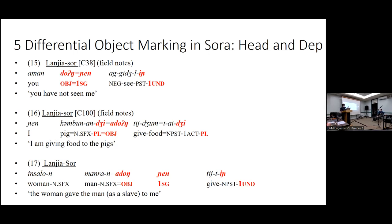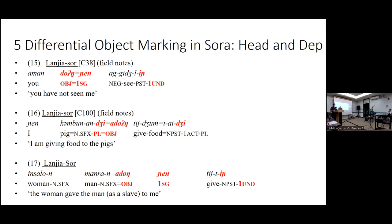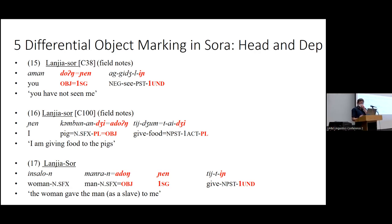One interesting thing about the dependent marking system in Sora is that we see a split in the distribution of the case marker. If it's a first or second person pronoun, the case marker appears as a prefix or proclitic. But if it's a third person pronoun or noun, it occurs as a suffix. This is a consistent pattern — pronouns take the case as a prefix, anything else takes it as a suffix. We're currently working on determining the prosodic integration of these forms, so I'll sometimes say clitics and sometimes say affixes because we're still analyzing the data.